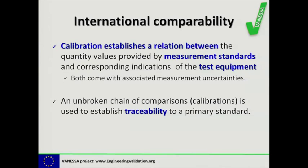The final point is international comparability. Calibration by definition establishes a relation between the quantity values provided by a measurement standard and the corresponding indications of your measurement or test equipment, both coming with their associated measurement uncertainty. This allows you to compare your results to an internationally recognized standard, and an unbroken chain of such calibrations establishes traceability to a primary internationally recognized standard.